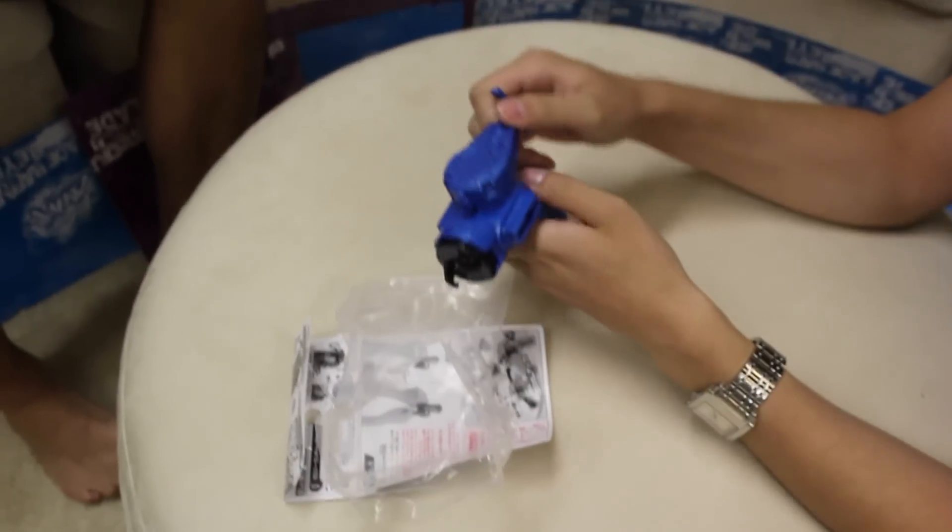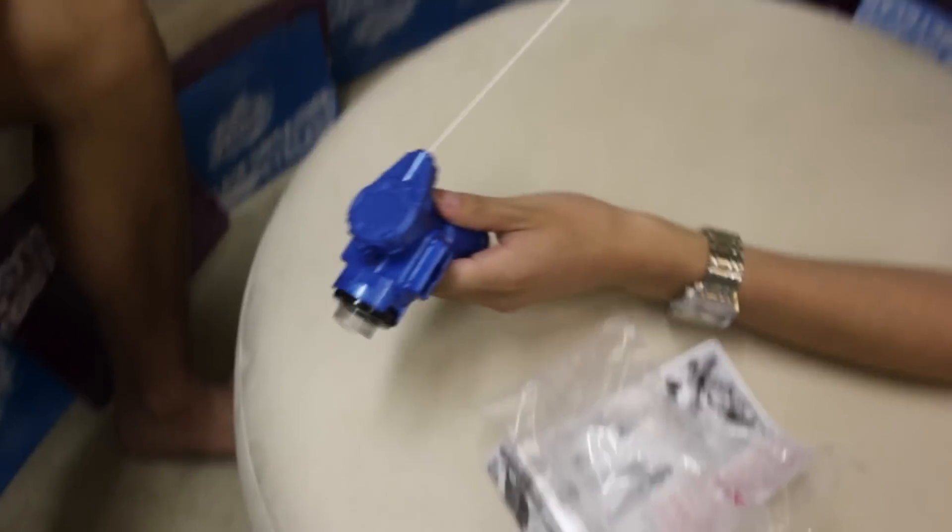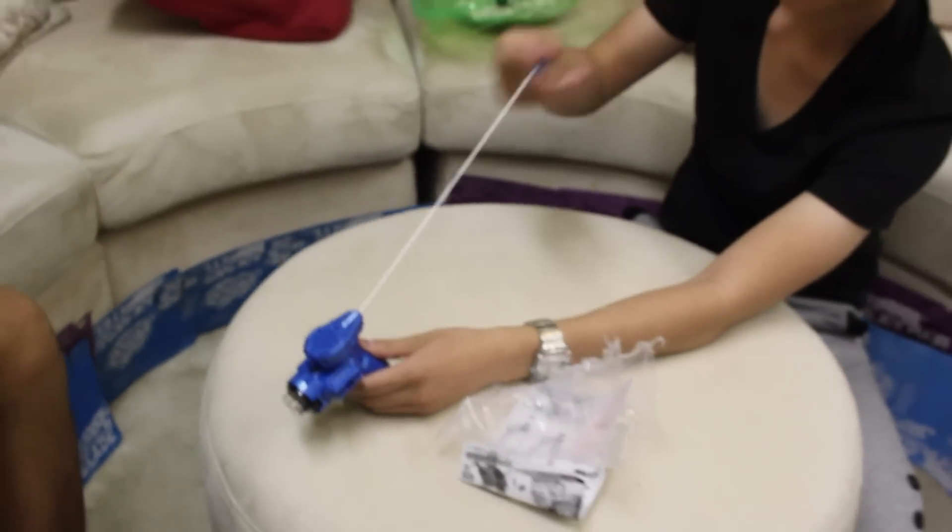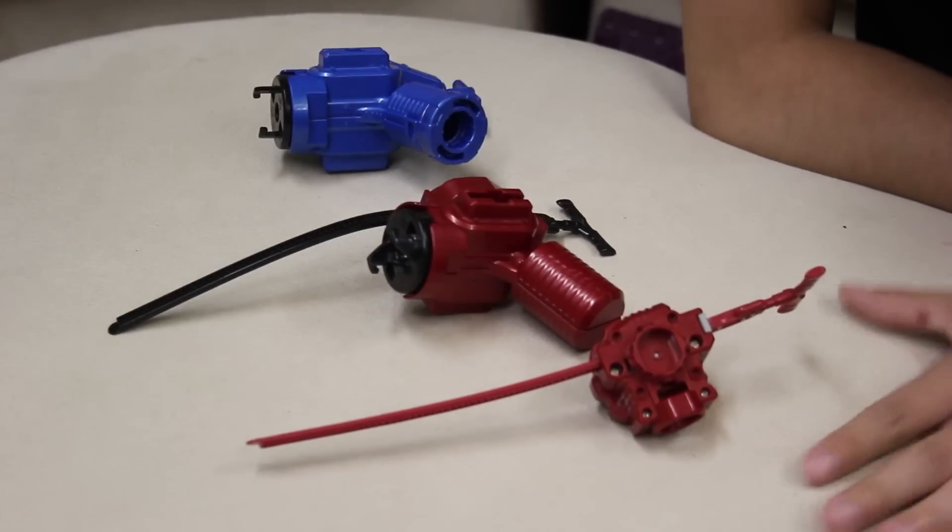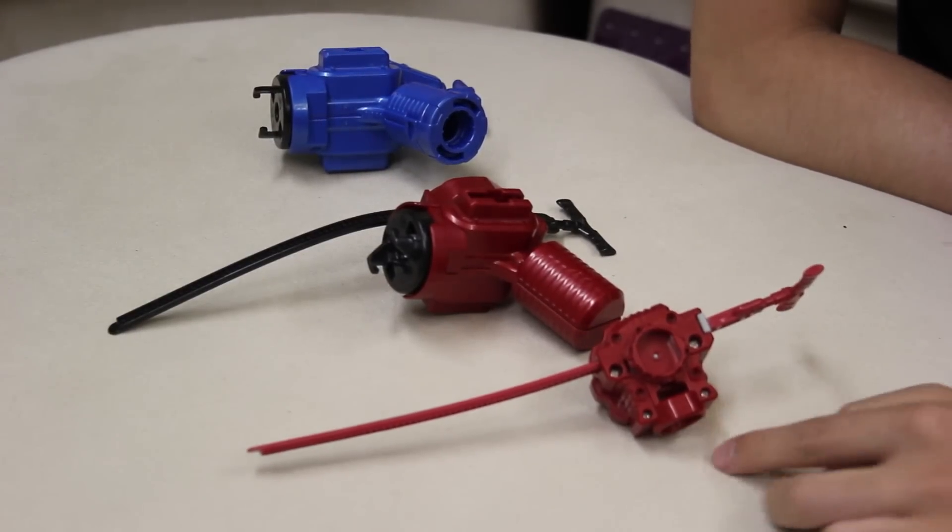They're all the same as well, about the same length I would say. Okay, still short. So here is all of our Zero G launchers. Here you have the standard compact launcher, you know, the weakest out of all of them, like one star everything.